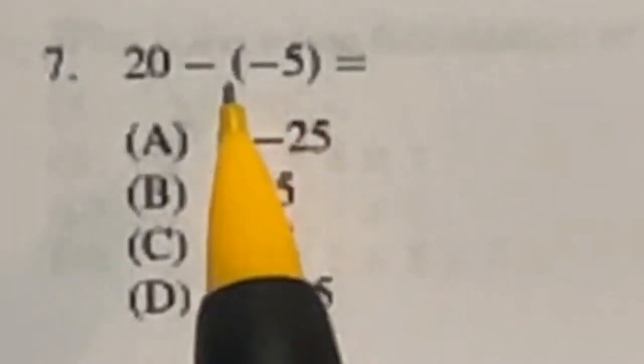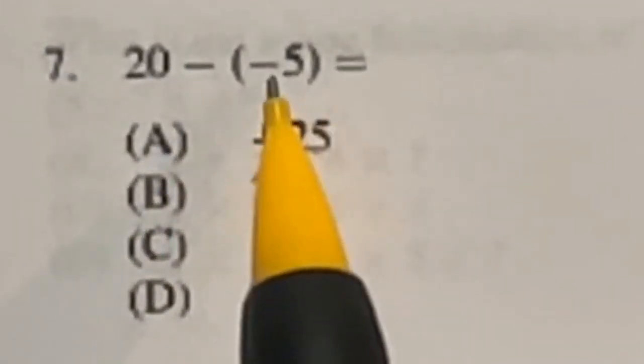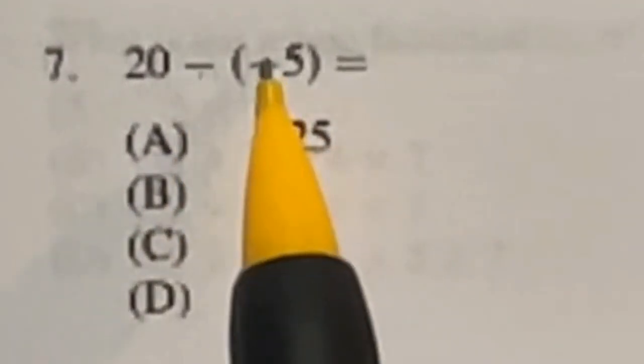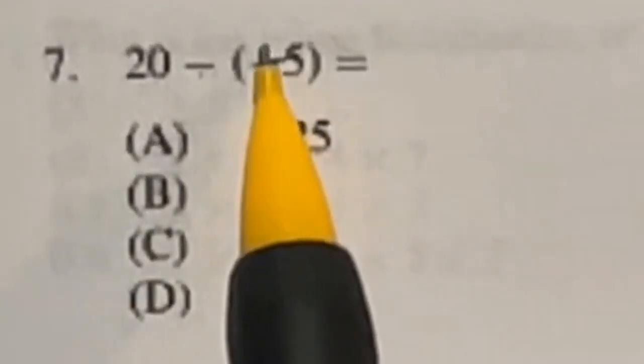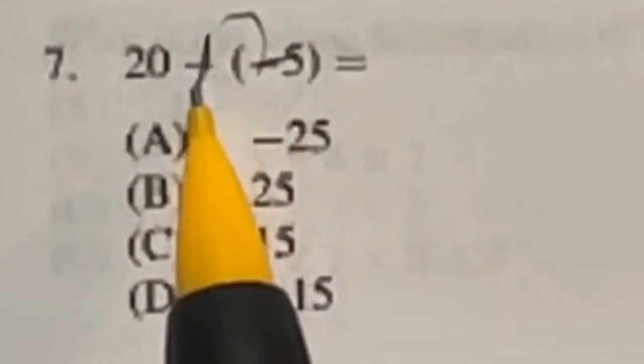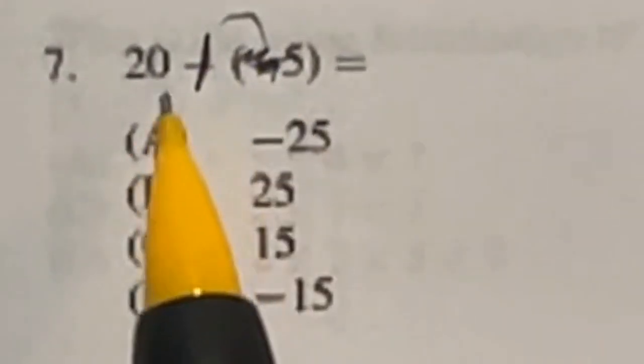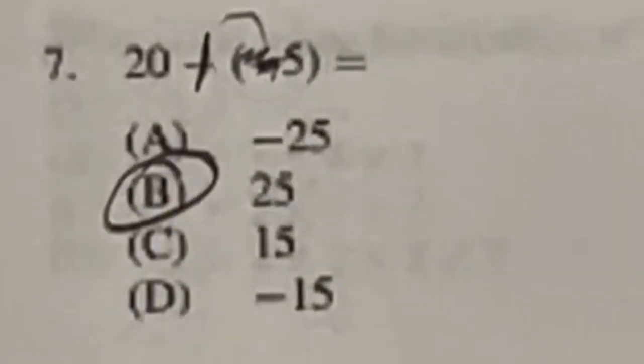So 20 minus negative 5. Well, this is asking if you know what to do when you are subtracting a negative. If you have a minus minus, you can actually take this guy and just kind of move it over here sideways to make this plus and cancel it out. That means this is really just 20 plus 5, which is 25. Answer B.